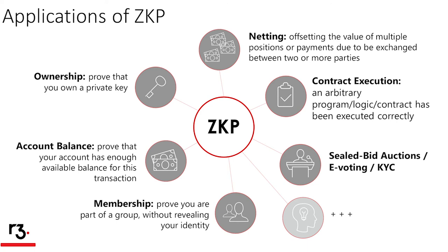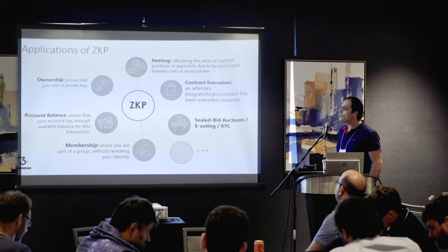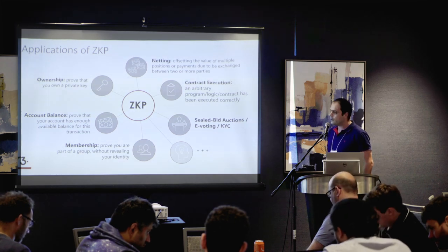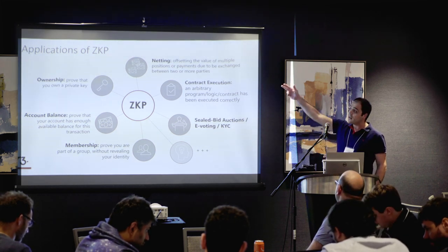The applications banks and insurance companies are currently requiring include: ownership, account balance, and inputs-equals-outputs — which is the most demanding and is required by the majority of smart contracts — membership, and netting.